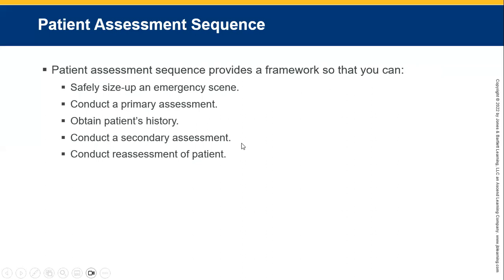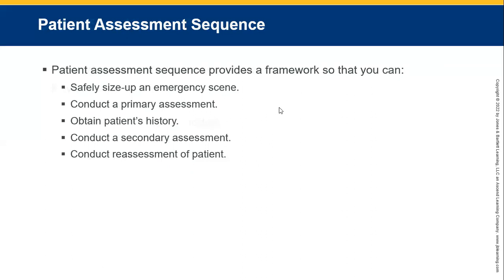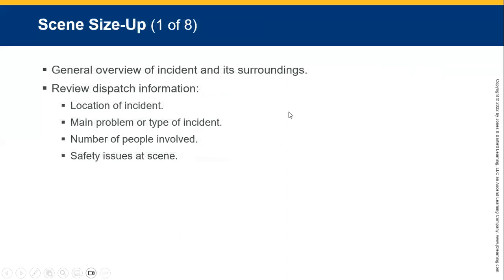Sometimes we will never get to do a secondary survey. In a situation where there's cardiac arrest and you need to do CPR, you might not get to do a secondary assessment. The primary assessment establishes the patient is not alive, not breathing, and you begin doing CPR. Or if there are positive signs of death, we will not do anything — we will wait for help to come.